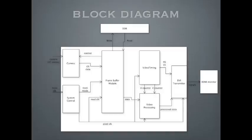The frame buffer module is in the middle. It gets data from the camera and then writes it to the DDR memory. Through another port, it reads the DDR and transfers the data to the video processing module. The new background is generated in this video processing module and then transferred to the DVI transmitter. The DVI transmitter takes charge of communication between the monitor and the board. There is also a video timing module that generates the HS and VS signals as well as the H counter and V counter.